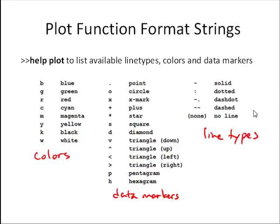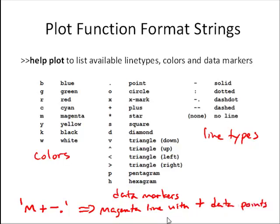So, for example, the plot string m plus dash dot would plot a magenta line with pluses marking the data points and the line would be a dash dot dash dot dash dot line. And you can put these in any order in the format string that you send to the plot function. So that pretty much covers it as far as creating basic 2D plots. Let's look at some slightly more advanced plots.